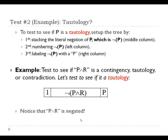Now, suppose we want to test to see if P and R is a tautology. What we do is put parentheses around the proposition and then negate it — that is, we write the literal negation of the proposition at line one. This is an important thing to keep in mind. If you're going to test to see if the proposition is a contingency, you make use of both tests, and if the proposition fails both, then you can conclude it is a contingency.